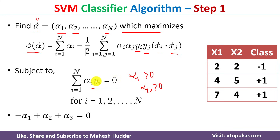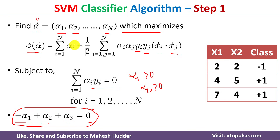Expanding the constraint for our three-example case: alpha1 * y1 + alpha2 * y2 + alpha3 * y3 = 0. Since y1 = -1, y2 = +1, and y3 = +1, this becomes: -alpha1 + alpha2 + alpha3 = 0. This constraint must be satisfied while calculating alpha1, alpha2, and alpha3.